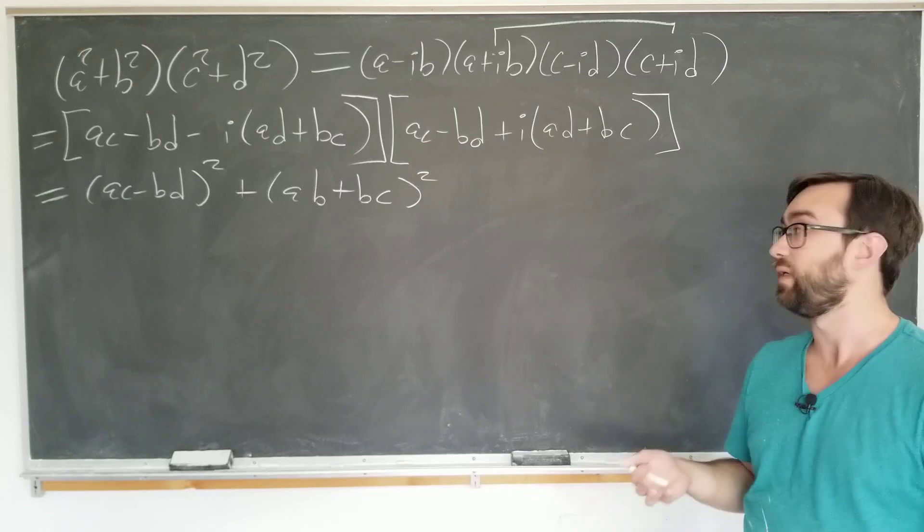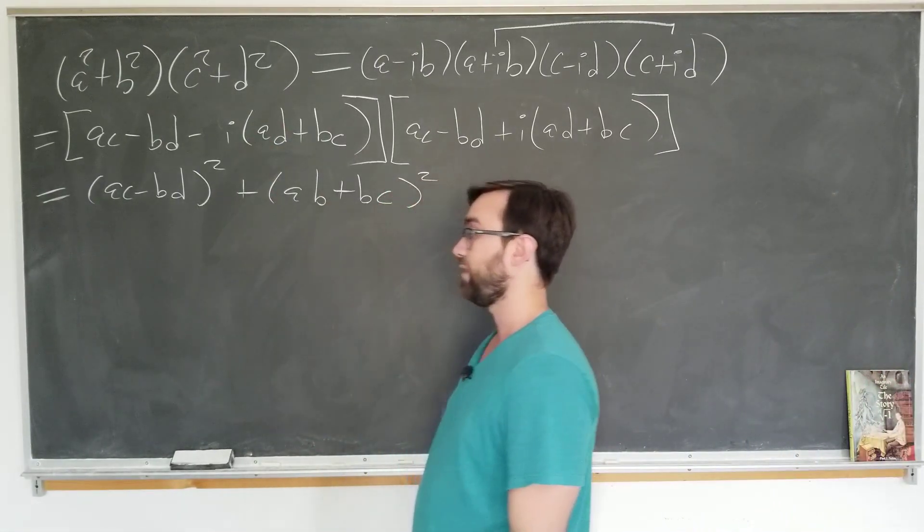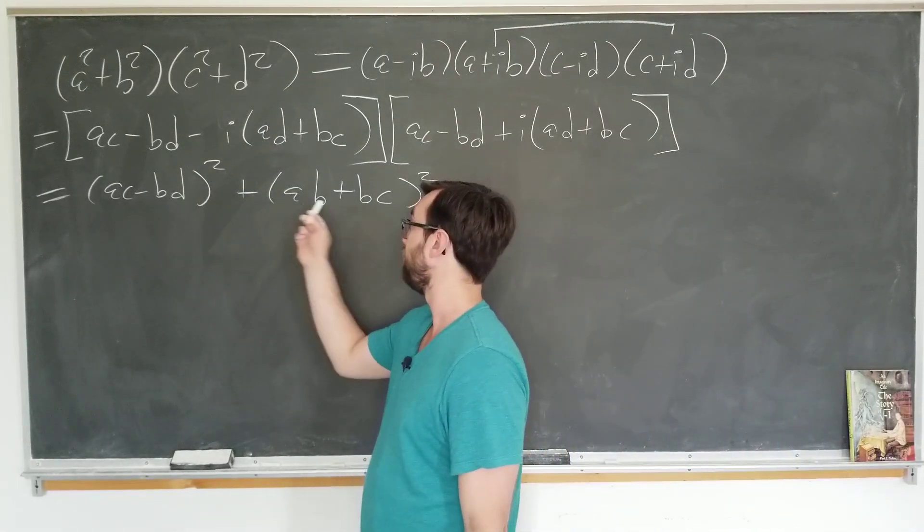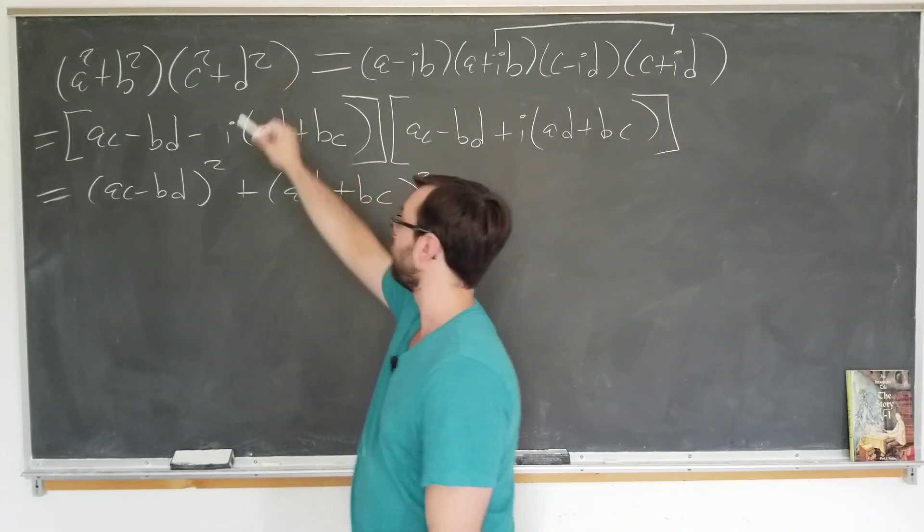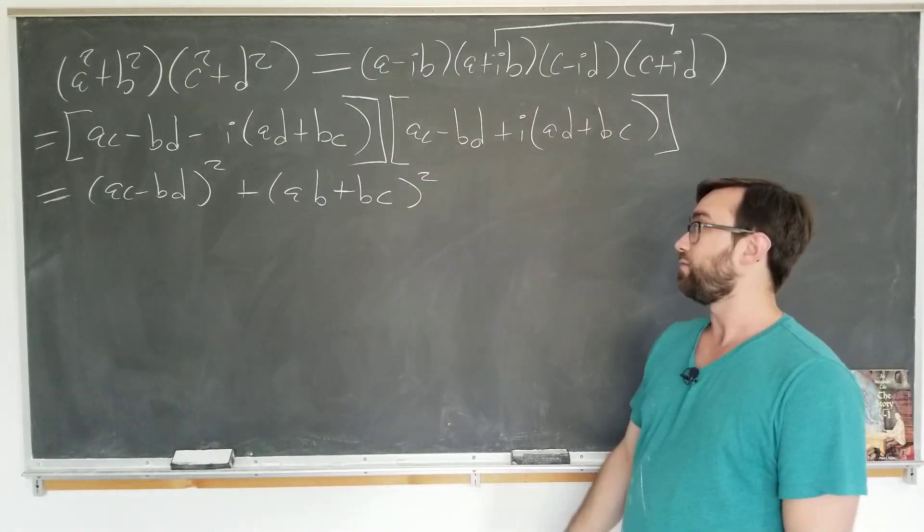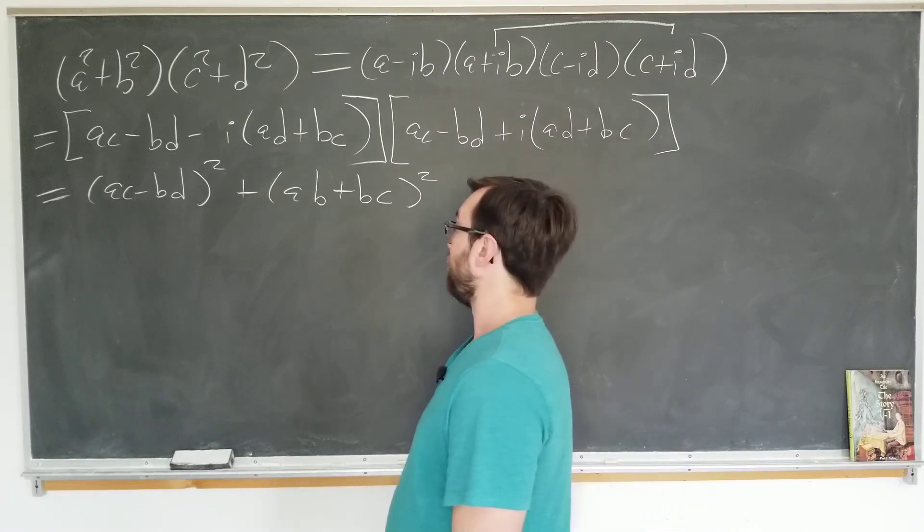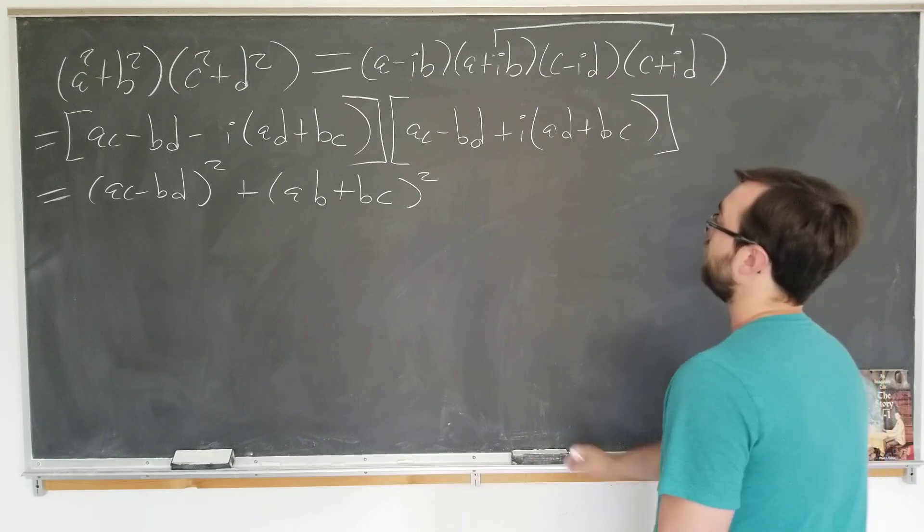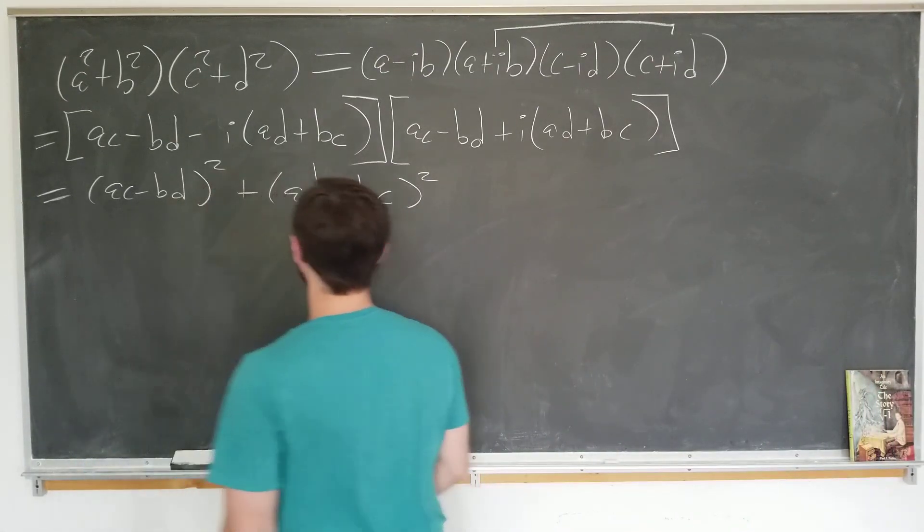Now I want to take this time and note that if I gave this to you in an exam, and I just wanted you to show that it was true, you could easily foil both of these terms and show that it is indeed equal to the product that we have up there. But that's not very illuminating. You wouldn't actually learn anything by doing that. And in fact, that's not how this relation was discovered originally. How would you come up with this originally?